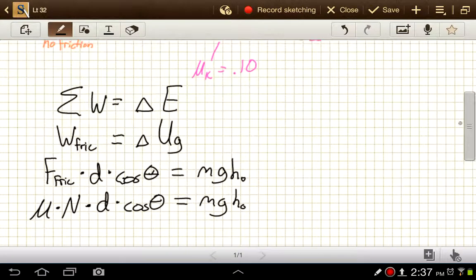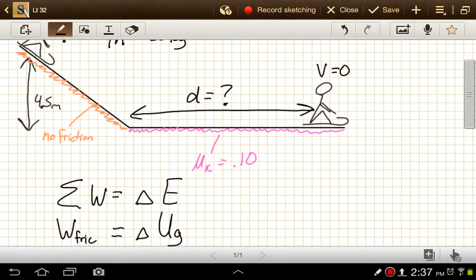In order to finish this one, I need to know what the normal force is. I have mu, I have the normal force, I'm looking for distance, the angle is going to be 180 degrees because friction points to the left and the kid's moving to the right. Mass is given, gravity I know, height initial I know, so the only thing I don't know at this point is normal force.